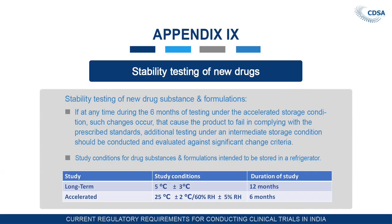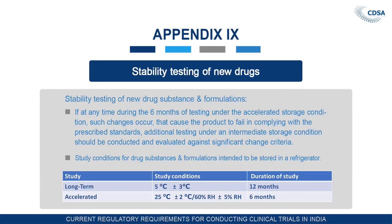If products are required to be stored under refrigerator conditions, for the long-term study the condition is 5°C ±3°C for 12 months, and for accelerated conditions it is 25°C ±2°C with relative humidity 60% for 6 months.